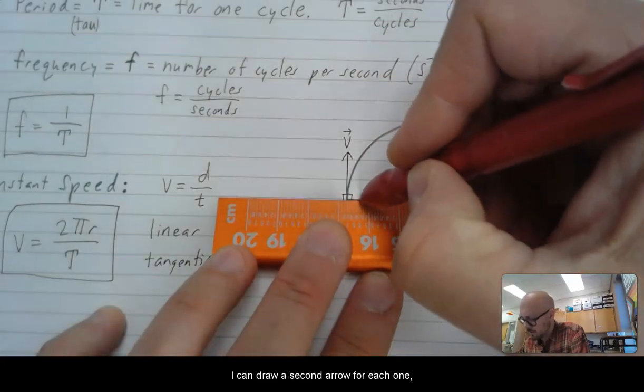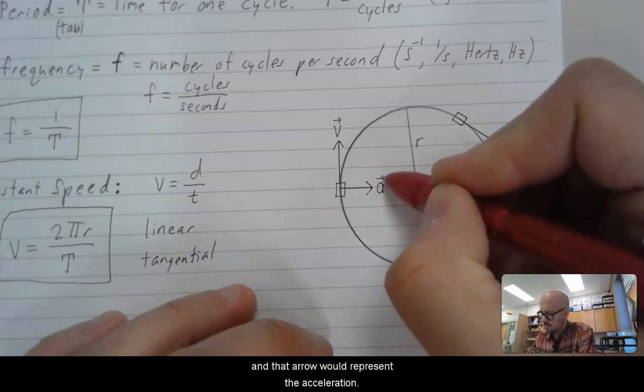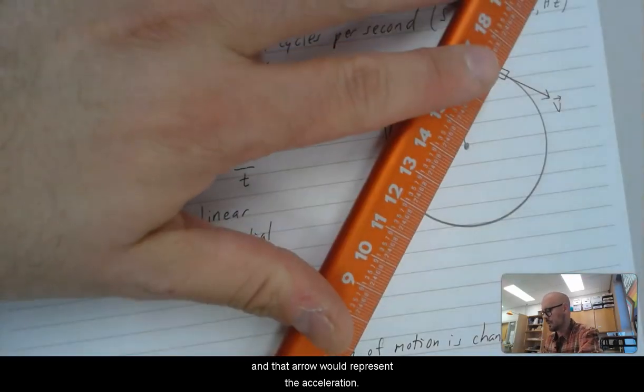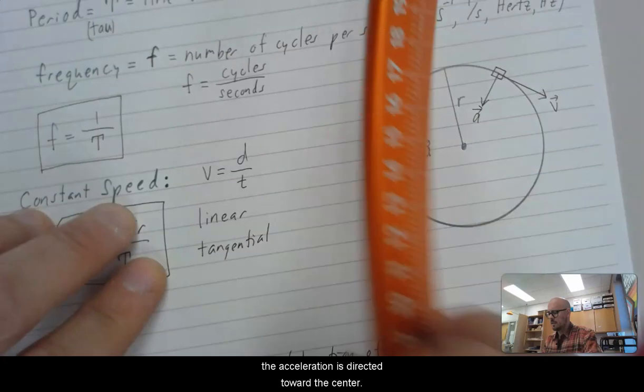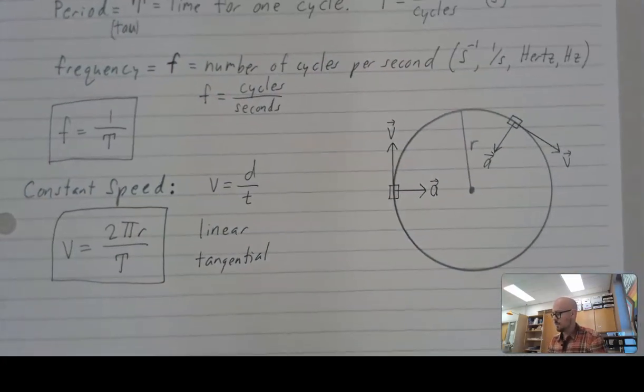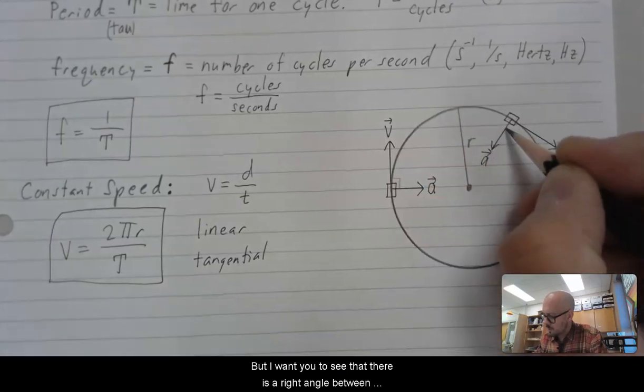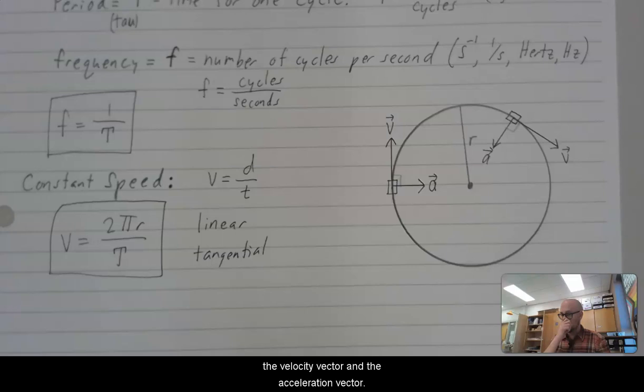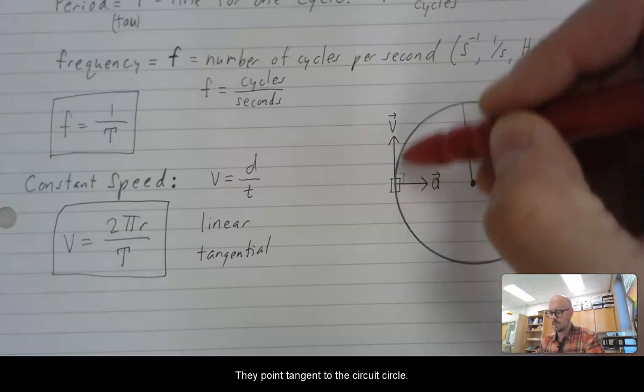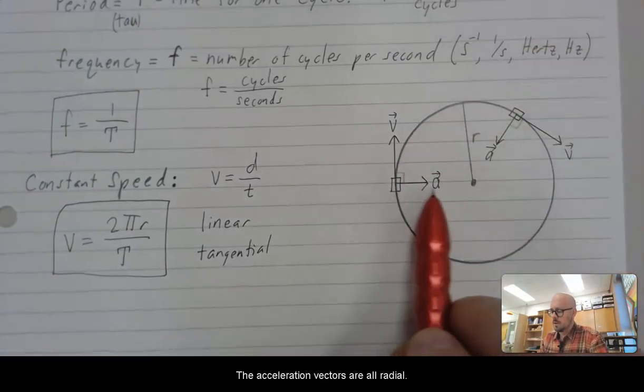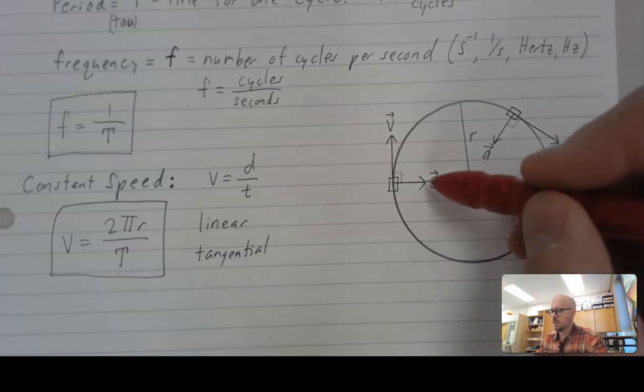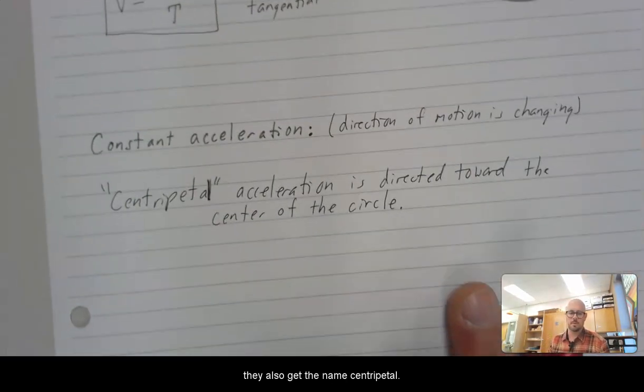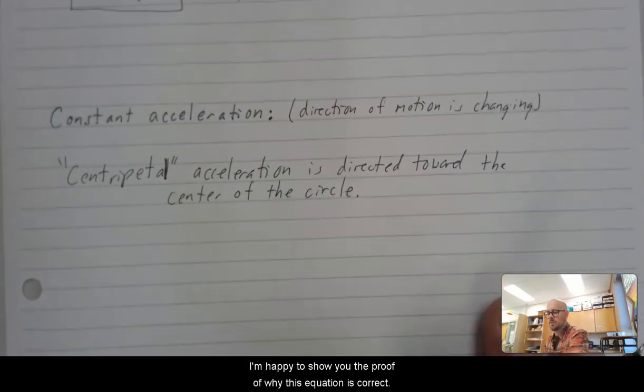So if I go to my diagram up here, I can draw a second arrow for each one. And that arrow would represent the acceleration. So at every point along this uniform circular motion, the acceleration is directed toward the center. And I tried to do my drawing very nicely, but I want you to see that there is a right angle between the velocity vector and the acceleration vector. The velocity vectors are all tangential. They point tangent to the circle. The acceleration vectors are all radial. They point inward or outward. So in this case, they point inward toward the center of the circle. And because they point inward, they also get the name centripetal.